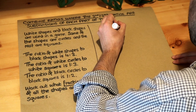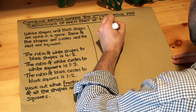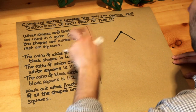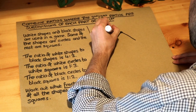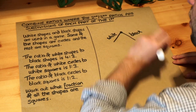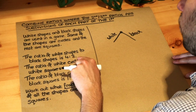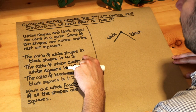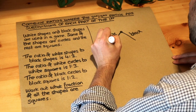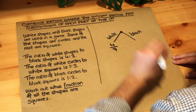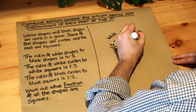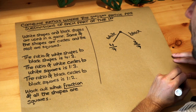I'll draw a little tree. Of all the shapes, some are white and some are black. The ratio is four to three, so there are seven parts in total. Four of those parts are white, so four-sevenths of the shapes are white, and three of those seven parts are black, so three-sevenths of the shapes are black.